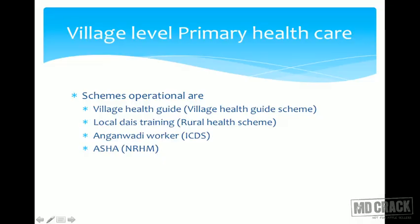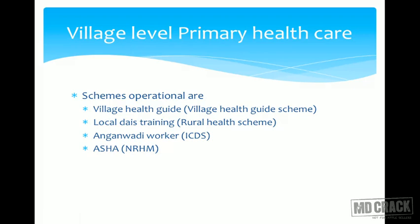Schemes operational right now under primary health care at the village level: the Village Health Guide is under the Village Health Guide Scheme. The second worker at the village/grassroot level is the Local Dai, under the Rural Health Scheme. Anganwadi workers are under the ICDS scheme. And last but not least — in fact the most important one — the ASHA, who is appointed under the National Rural Health Mission (NRHM).